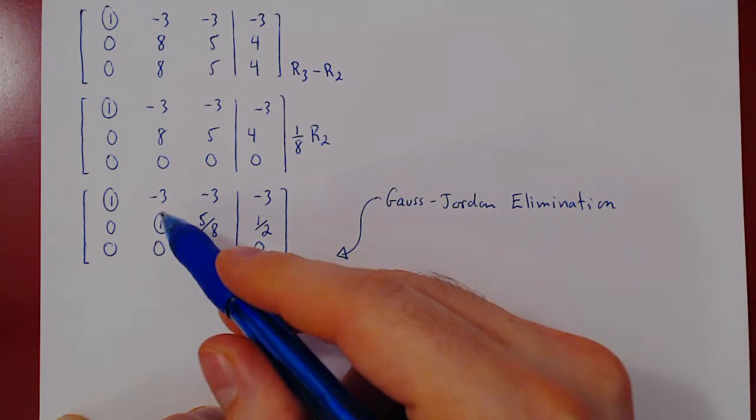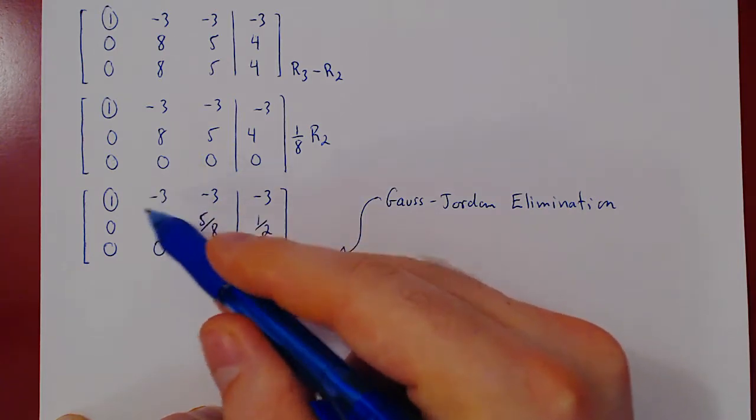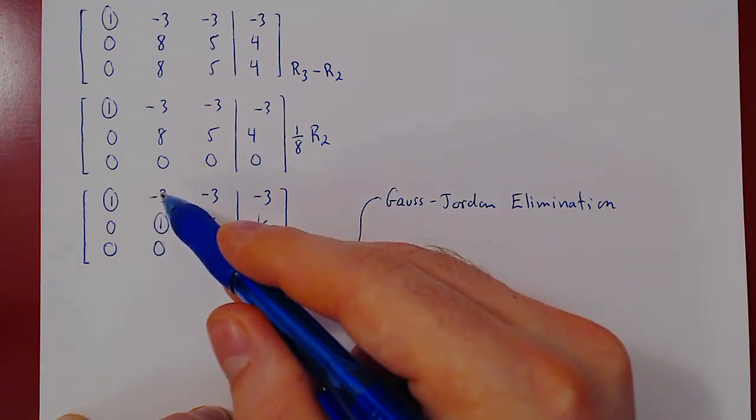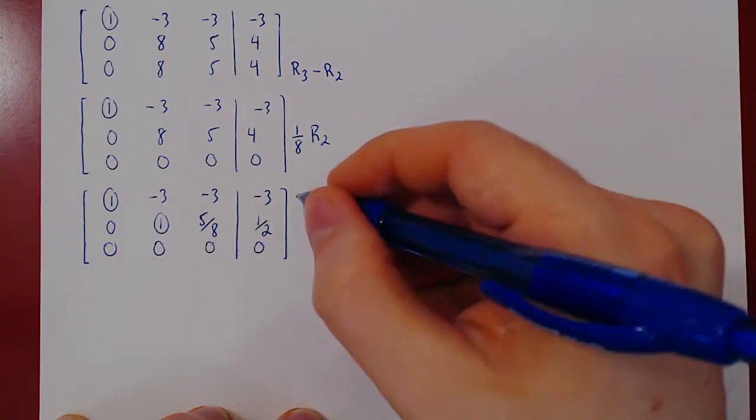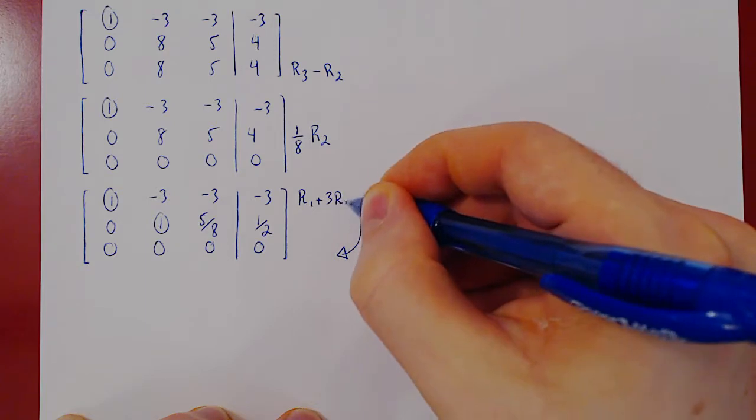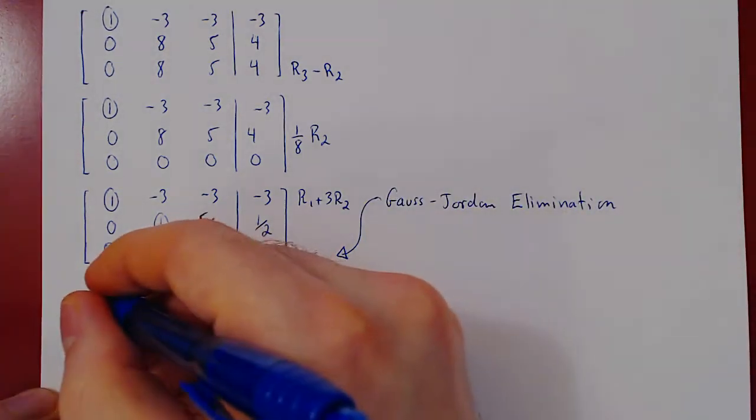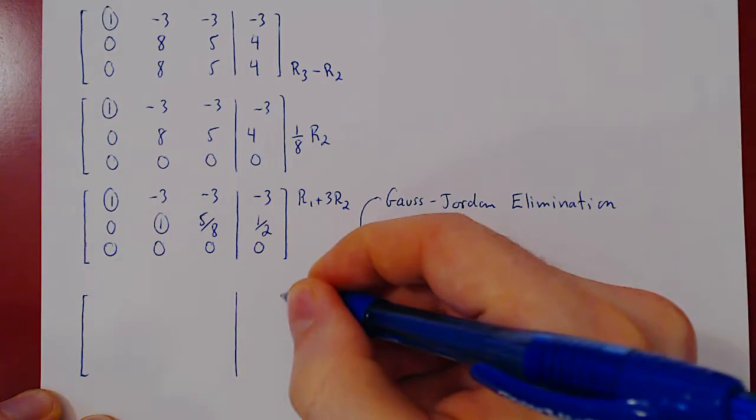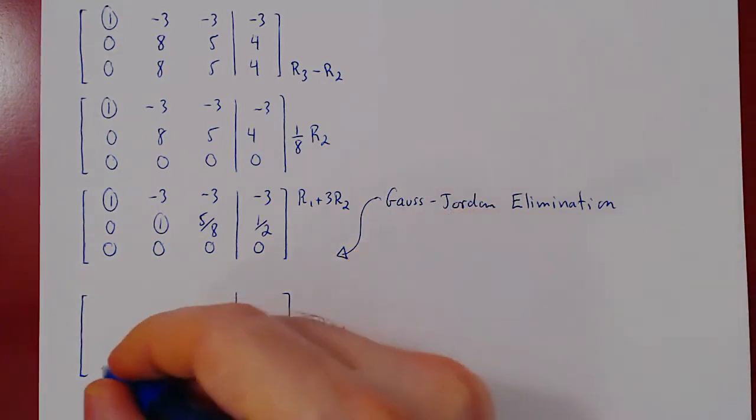Well, this is our last leading one. There's a single entry above it. Let's kill it by doing row 1 plus 3 row 2. We can recopy the bottom two rows, as we're not changing them.